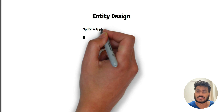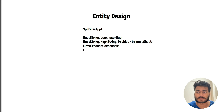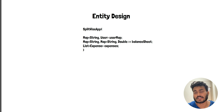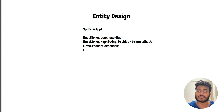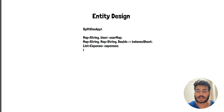The non-functional requirements are that it should be easily scalable and the design should be flexible. For the entity design, the Splitwise application will have three things: a user map containing all user data like a user ID to user map, a balance sheet which will have a user ID corresponding to a map of all users and the amounts they owe, and a list of expenses added on the app.